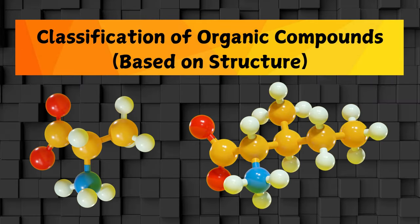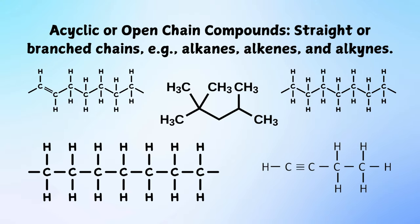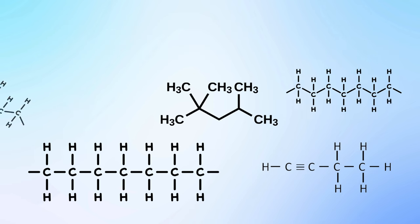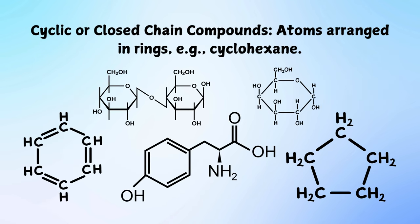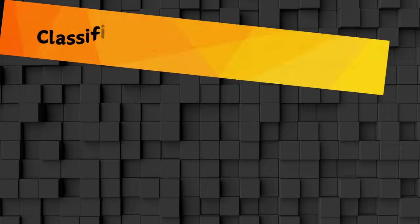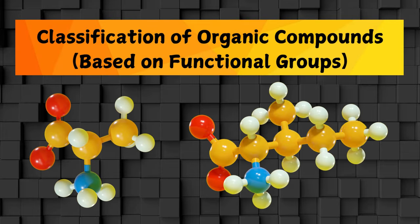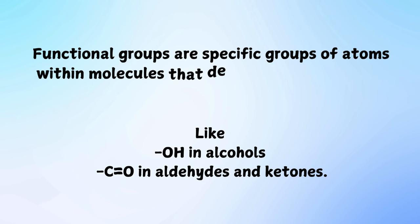Classification of organic compounds based on structure: acyclic or open-chain compounds include straight or branched chains. Examples include alkanes (single covalent bond), alkenes (double covalent bond), and alkynes (triple covalent bond). Cyclic or closed-chain compounds have atoms arranged in rings, for example cyclohexane. Classification based on functional groups: functional groups are specific groups of atoms within molecules that determine the chemical reactivity and properties of the compound.